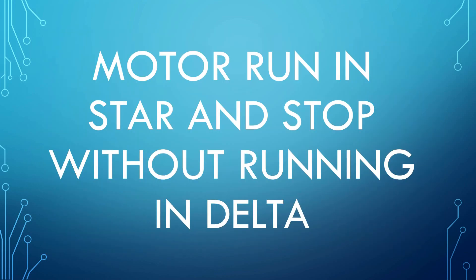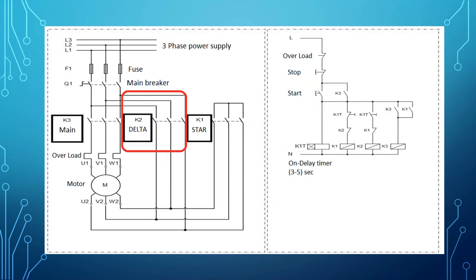Motor Run in Star and Stop Without Running in Delta. If the motor runs in star and stops after a while as the timer is set, then the first step is to check the delta contactor.